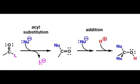Shown here is the general reaction sequence of acyl substitution followed by addition. When starting with a carboxylic acid derivative such as an ester or an amide that contains a heteroatom that can act as a leaving group, a nucleophile can displace this leaving group in the acyl substitution mechanism.